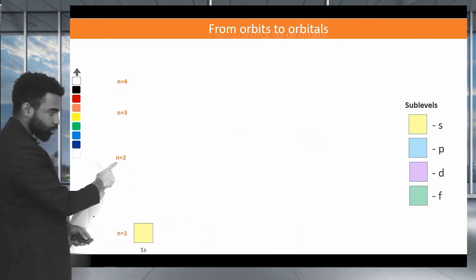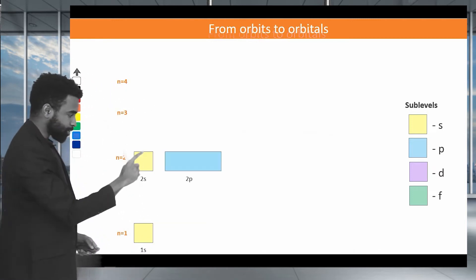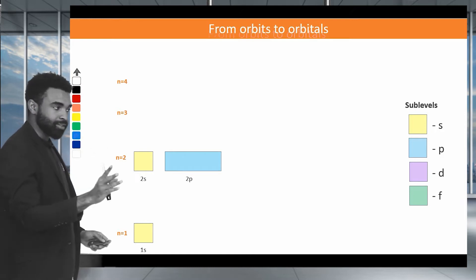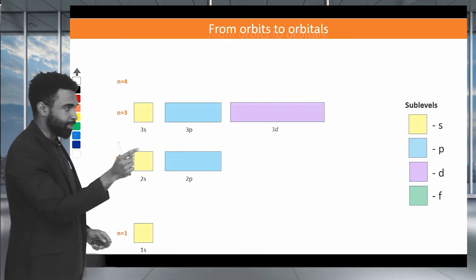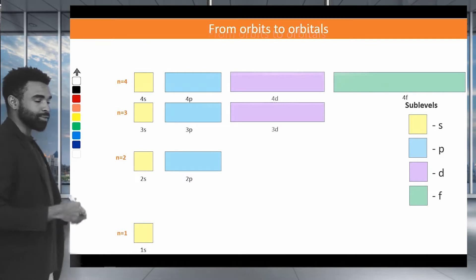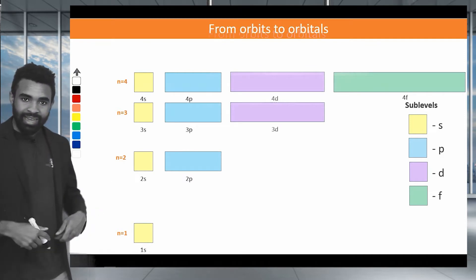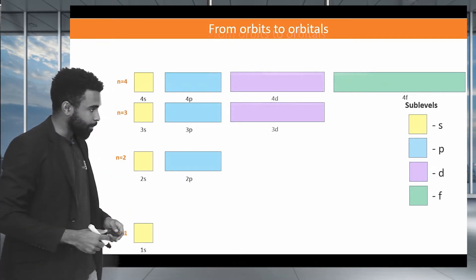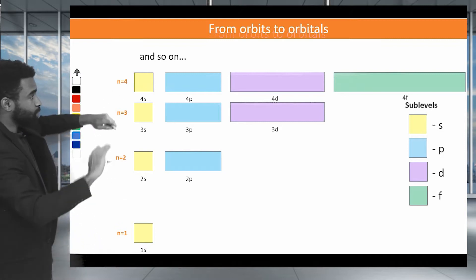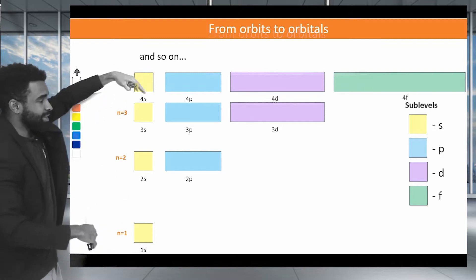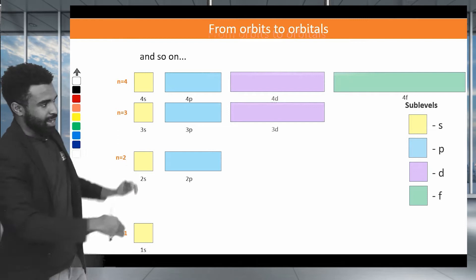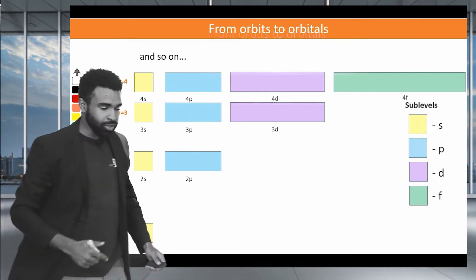The n equals two level has two sublevels: S and P. The n equals three has three sublevels: S, P, D. And n equals four has four sublevels: S, P, D, and F. They keep going — five, six, seven — and in theory the sublevels continue: G, H, and so on. The important thing is that energy also increases across the sublevels: F is higher energy than D, which is higher energy than P, which is higher energy than S.